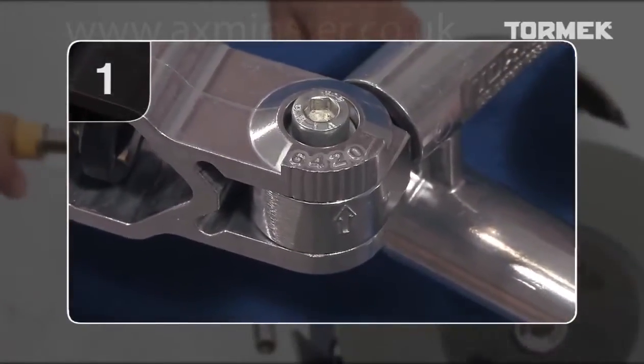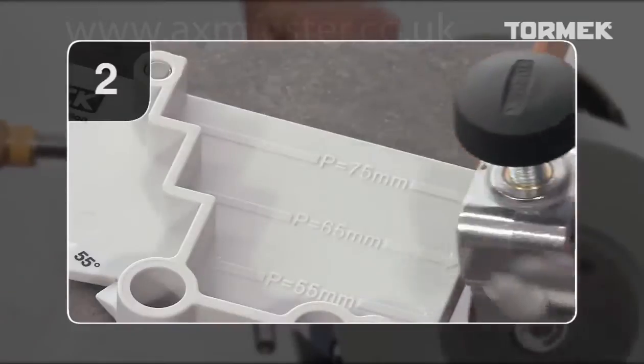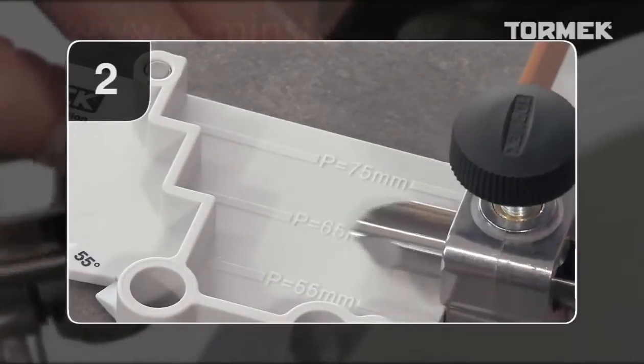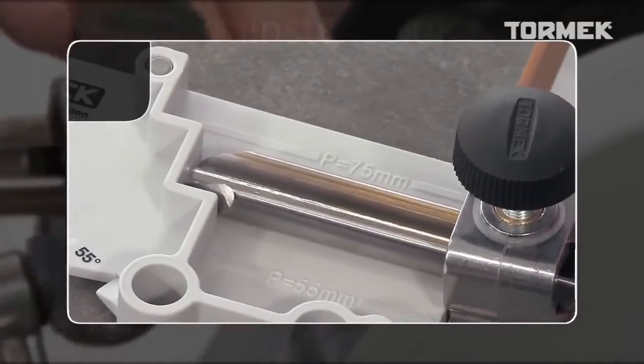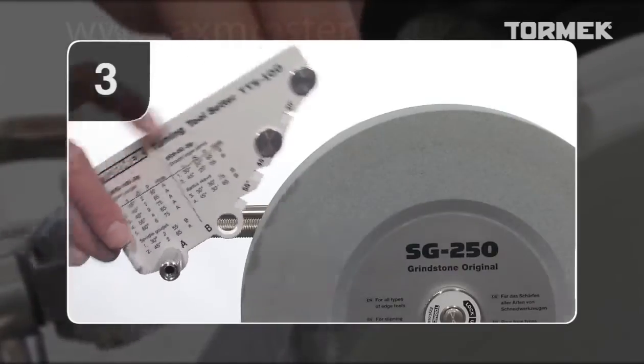Number one, the jig setting. Number two, the protrusion. And number three, the distance to the stone.